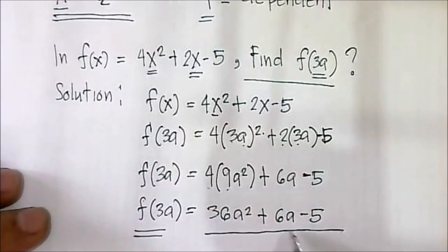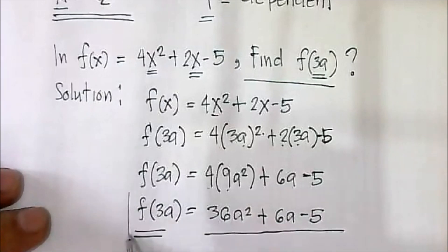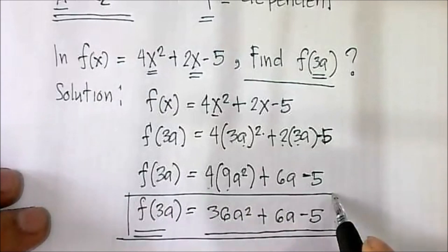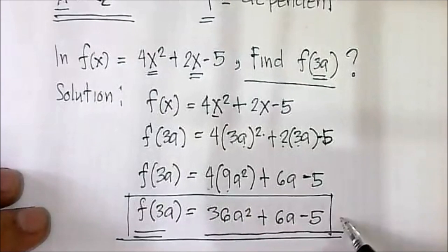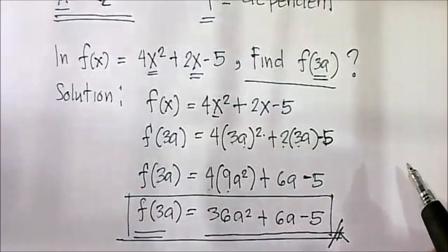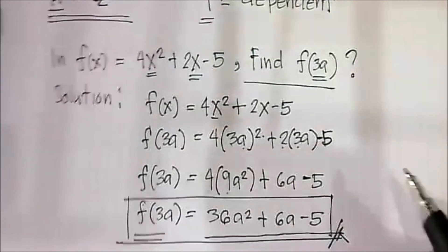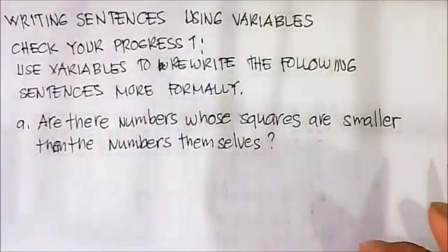Therefore, f(3a) equals 36a squared plus 6a minus 5. This is our final answer.